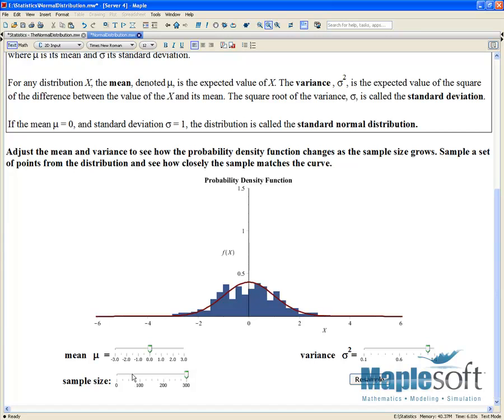And we can see as we're sampling from this normal random variable distribution, we can see that as we increase the number of samples, we get closer and closer to fitting the area underneath this bell curve.